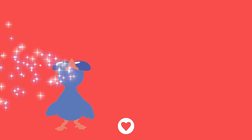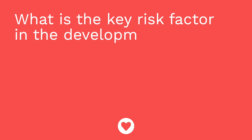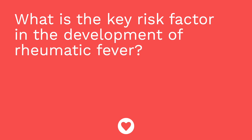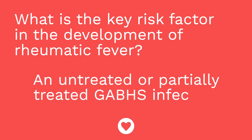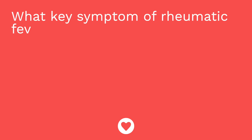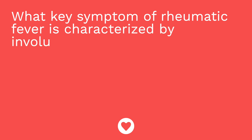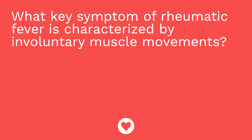It's time for a quiz. Question number one: what is the key risk factor in the development of rheumatic fever? The answer is an untreated or partially treated GABHS infection. Question number two: what key symptom of rheumatic fever is characterized by involuntary muscle movements? The answer is chorea.